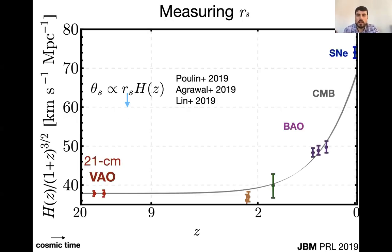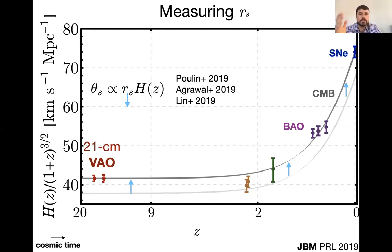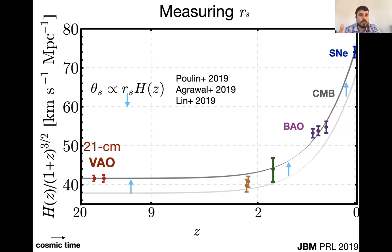An important thing to notice is that all these H measurements from VAO, BAO, or the CMB don't actually measure H directly — they measure an angle theta, which is a product of the sound horizon times H. If you make the sound horizon smaller, you'll think that H is lower, and you can get the CMB to agree more or less with the supernovae. So by changing the length of your standard ruler, you would change what you think you've observed. With VAO, the error bars are much smaller than this discrepancy. So if something is really behind the H0 tension, with the VAO you'll be able to tell — you'll be able to measure the sound horizon, essentially.